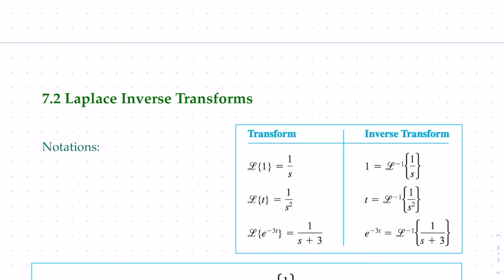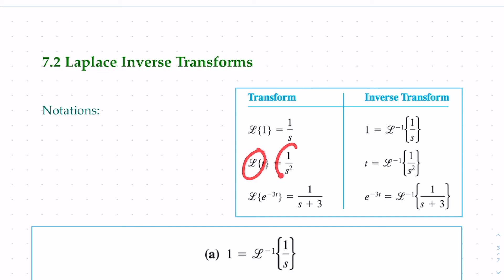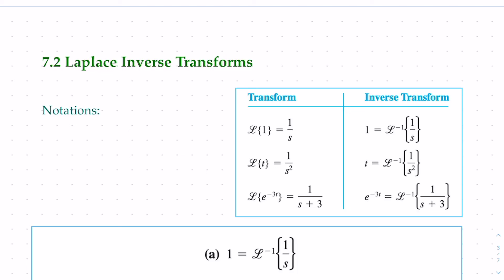I'll stop this video here. In the next video, we'll talk about how the inverse Laplace works — it's basically the reverse process. L{1} = 1/s, so the inverse Laplace of 1/s is 1. L{t} = 1/s², so the inverse Laplace of 1/s² is t. L{e^(−3t)} = 1/(s+3), so the inverse Laplace of 1/(s+3) is e^(−3t). We'll discuss this in detail in the next video.